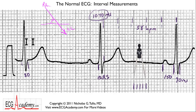For the QT interval, since it starts on a light line, count off: 40, 80, 120, 160, 200, then another 40, 80, 120, 160 — it comes right back to baseline at 200 plus 160, which equals 360 milliseconds. That's the QT interval.